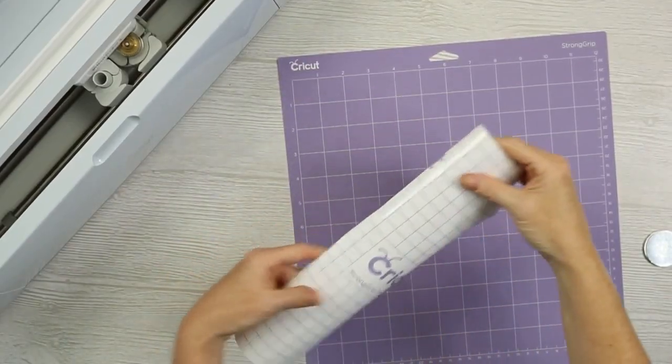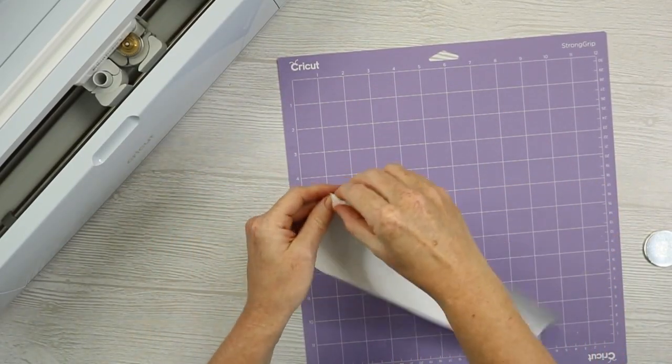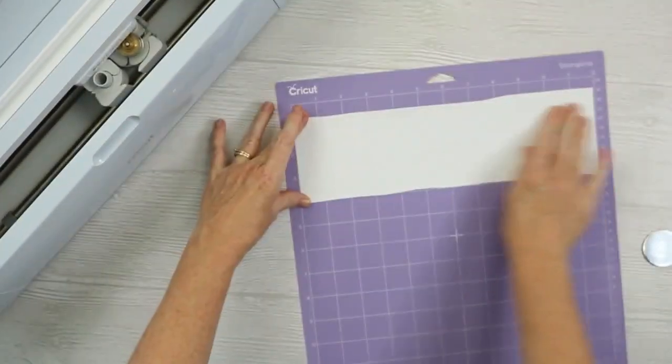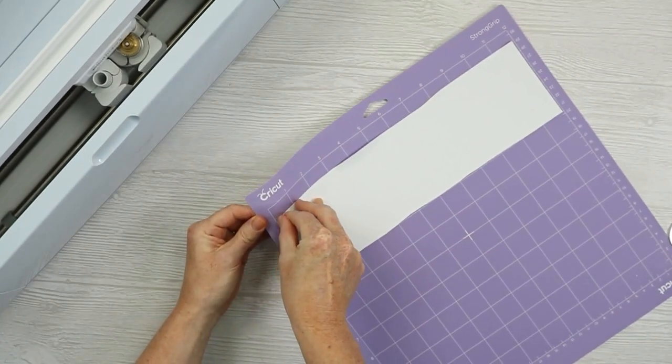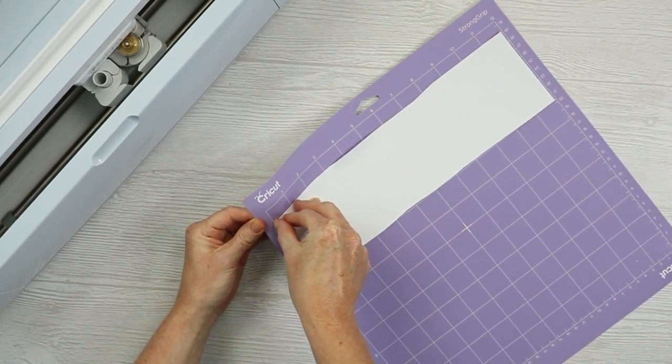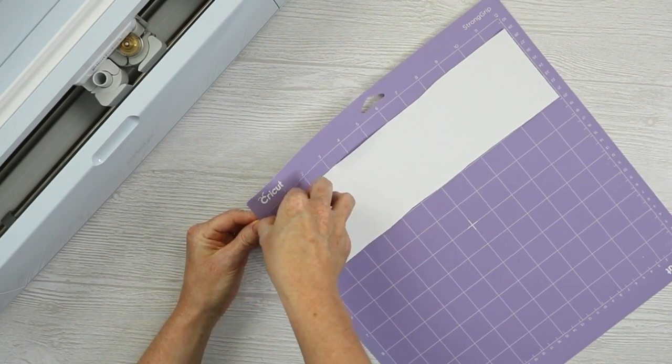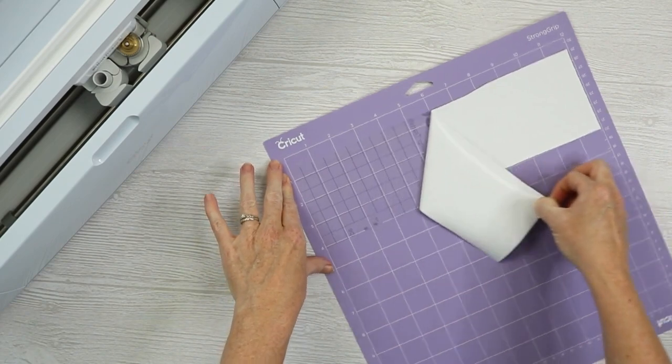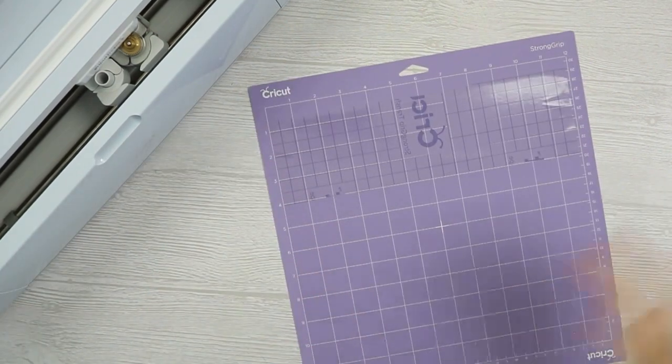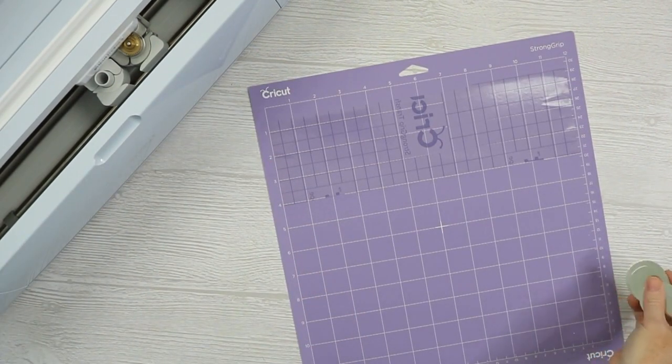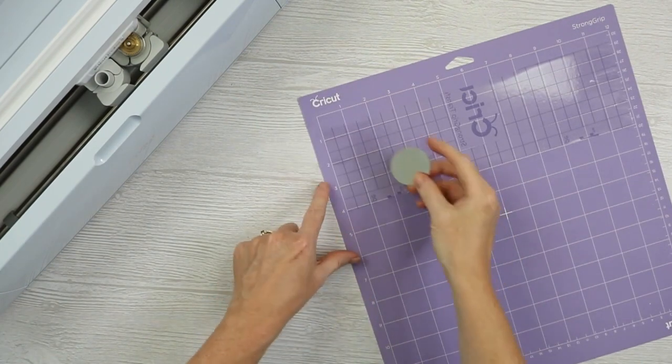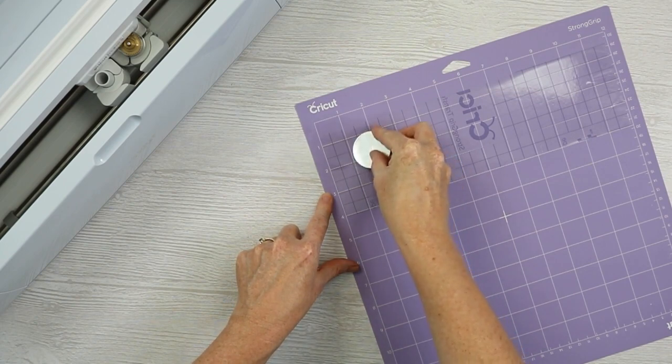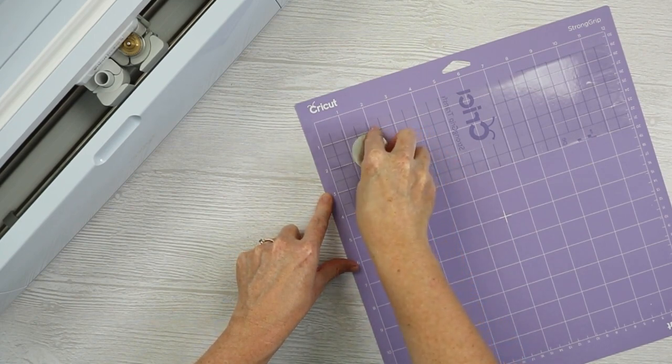The first thing you want to do is take strong grip transfer tape. It must be the strong grip. And we are going to place it face down on the mat, wherever we're going to put our blanks. So I'm going to put them approximately in this area. And then you want to peel that backing paper back. And we're leaving the sticky portion of the transfer tape on the mat.